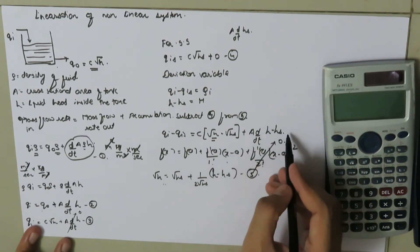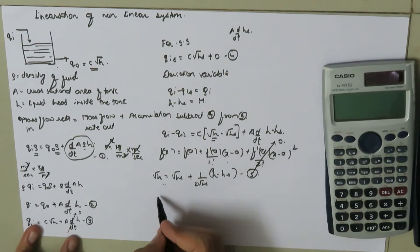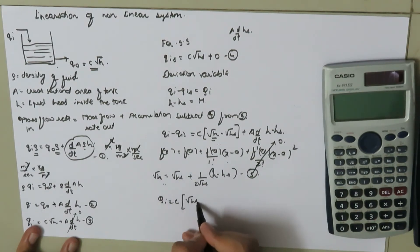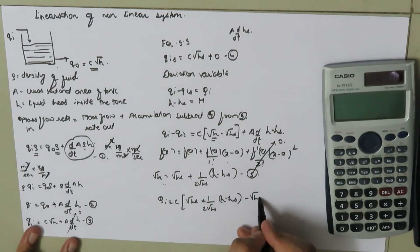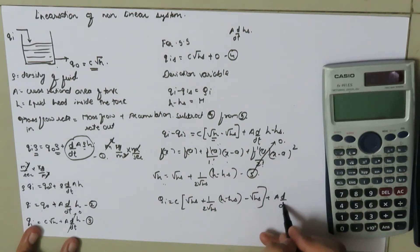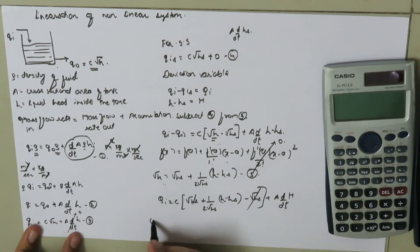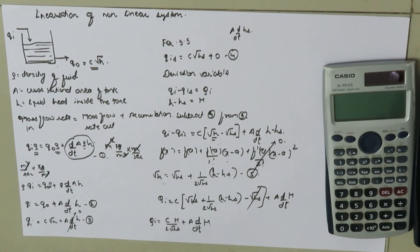Substituting equation five into our working equation: Q_i (capital) equals C times [√H_s plus (1/(2√H_s))·(H minus H_s) minus √H_s] plus A·d(capital H)/dt. The √H_s terms cancel, leaving: Q_i equals C times (H/(2√H_s)) plus A times d(capital H)/dt.